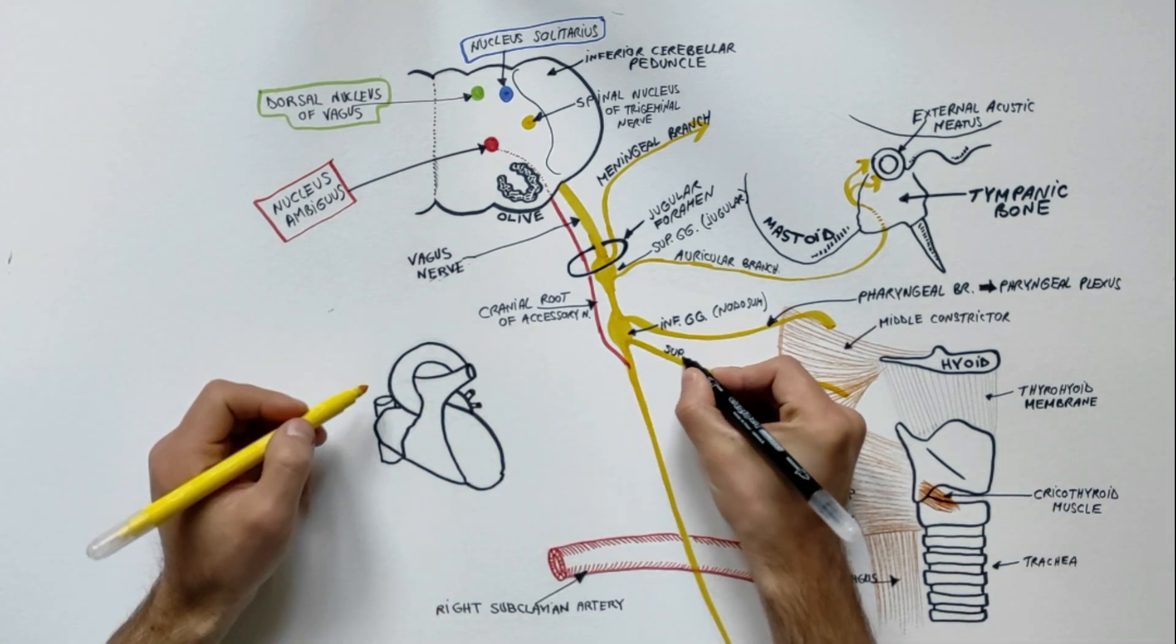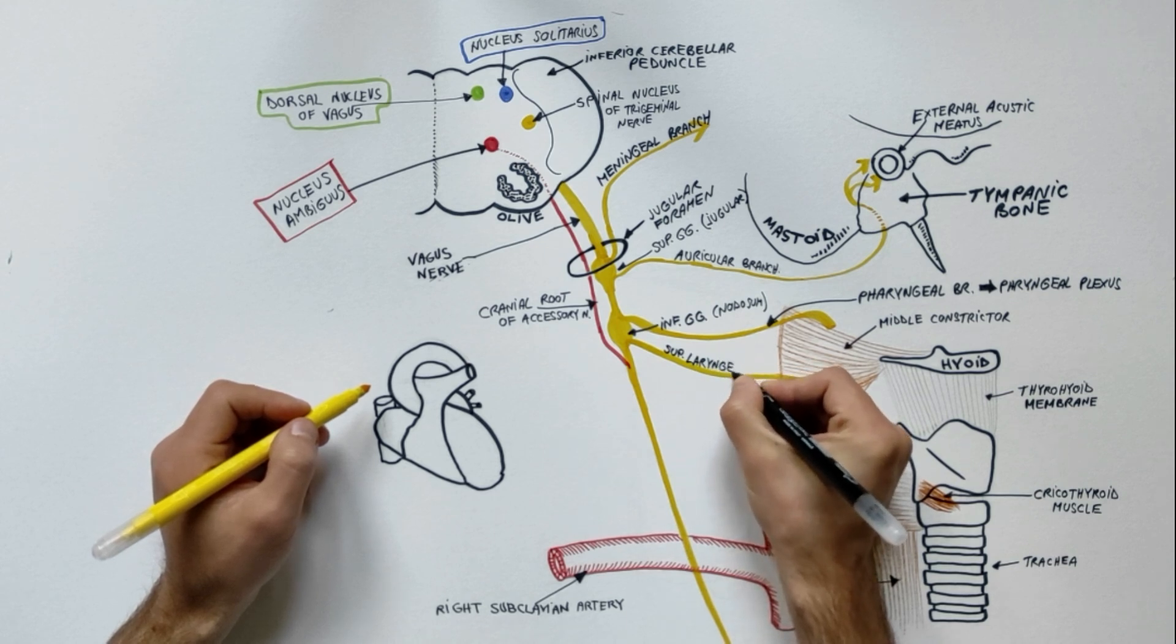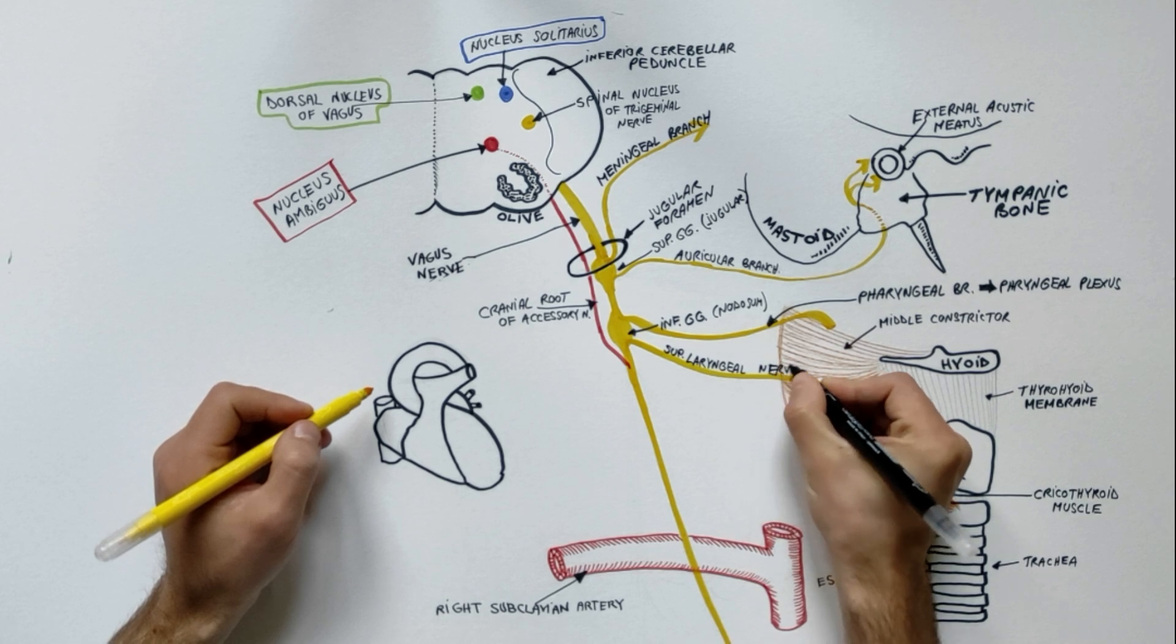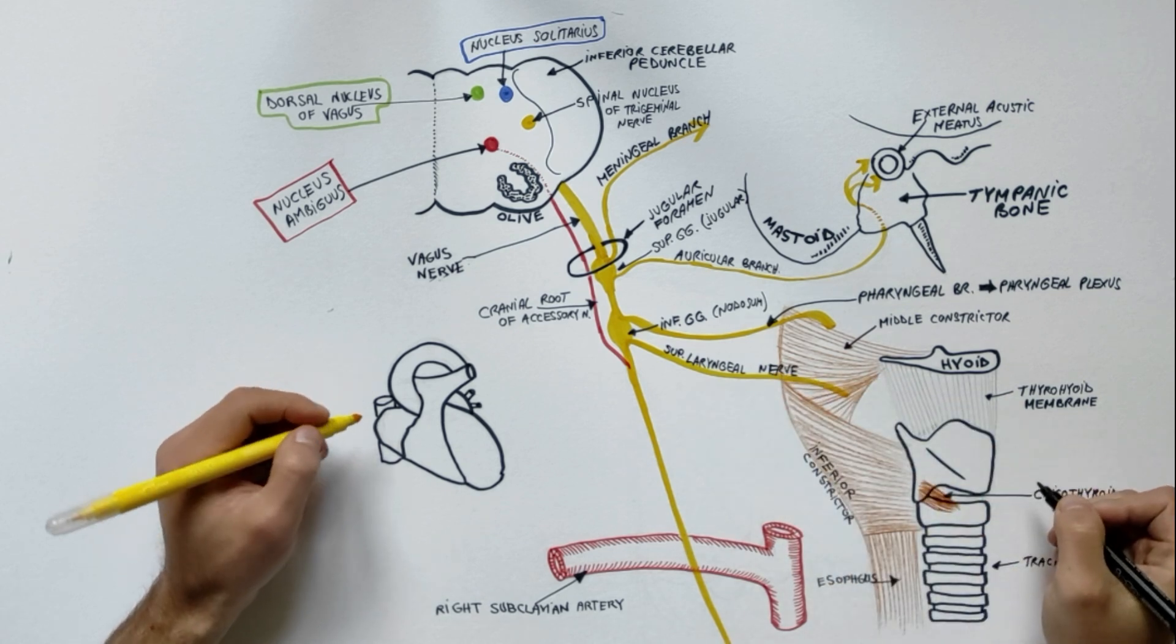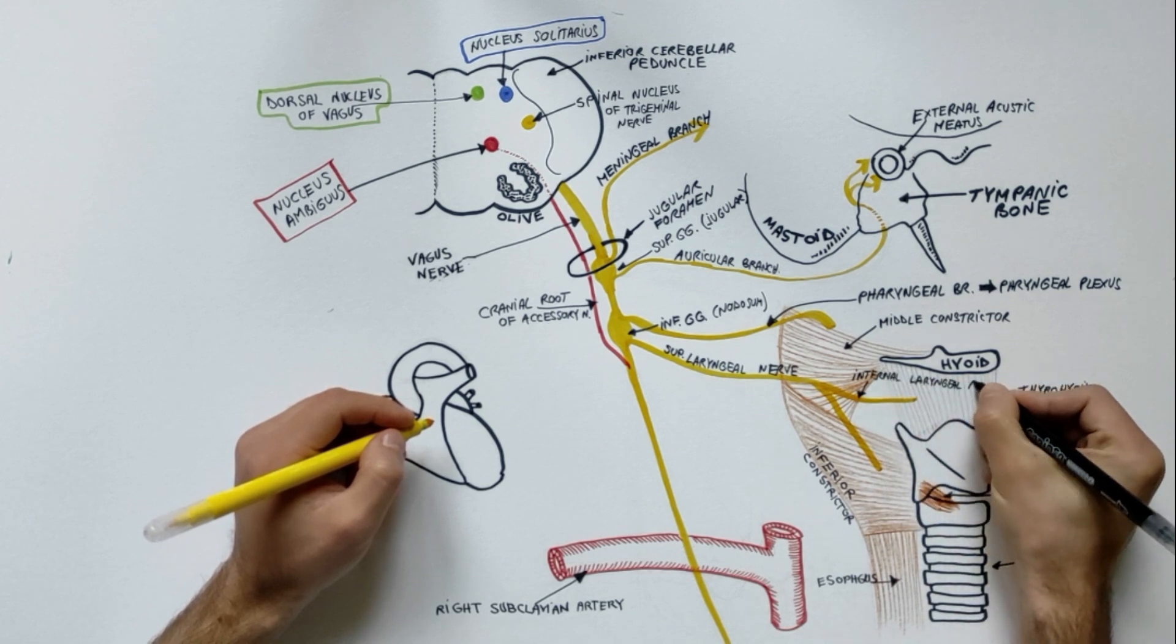The superior laryngeal nerve arises from the inferior ganglion or just below it and passes downward and forward to reach the middle constrictor where it divides into internal and external laryngeal nerves.